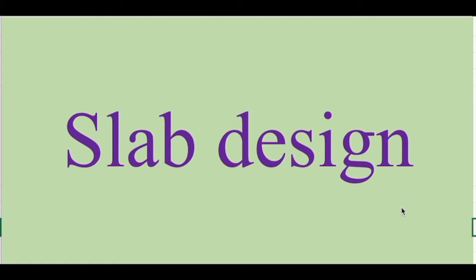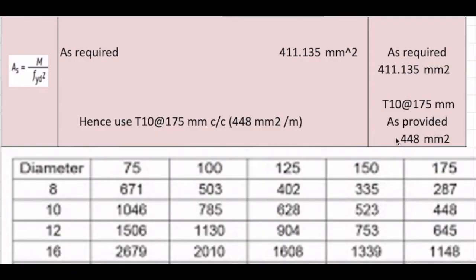I'm going to do the spacing checks, shear checks, and deflection checks for the area of steel which we provided. In the procedure I found that the area of steel required was 411.135 mm², and using the bar table for the 10mm bar, I found that T10 at 175mm centre-to-centre spacing gives an area of steel provided of 448 mm². Today I'm going to see whether that provided area of steel satisfies all the checks.